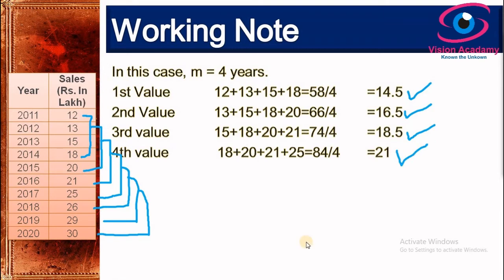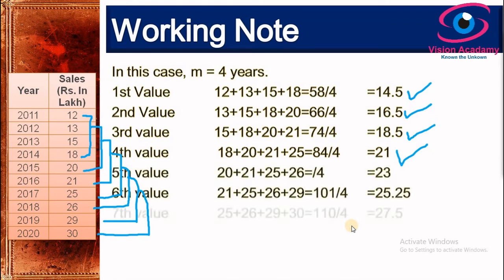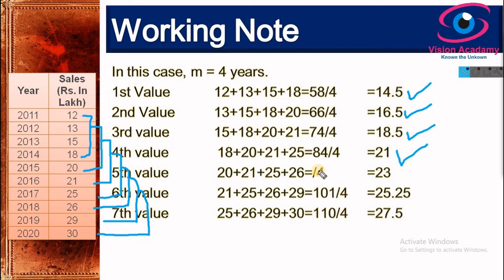For the fifth value, I consider 20, 21, 25, and 26, which totals 92. Dividing by 4 gives a fifth value of 23. For the sixth value, I discard 20 and consider 21, 25, 26, and 29, which accounts for 101 divided by 4, giving 25.25.